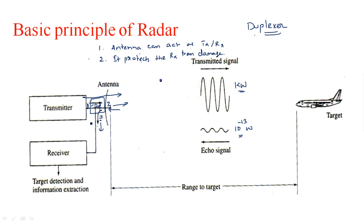During transmission, the signal will not enter the receiver, and during reception, the signal will not enter the transmitting section. So the single antenna acts exclusively as a transmitter during transmit time and exclusively as a receiver during receive time. This duplexer concept goes deeper than the basic radar principle, which only shows transmitting section, receiving section, and antenna.